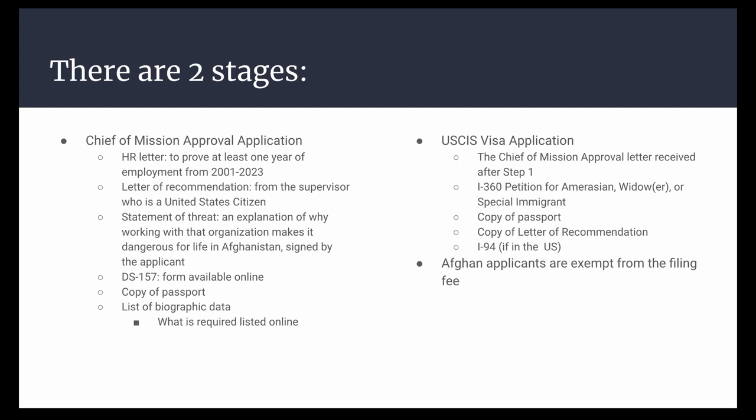The second step is your USCIS visa application. You should include the Chief of Mission approval letter received after Step 1, Form I-360, a copy of your passport, a copy of the letter of recommendation, and your I-94 if you are already in the United States.